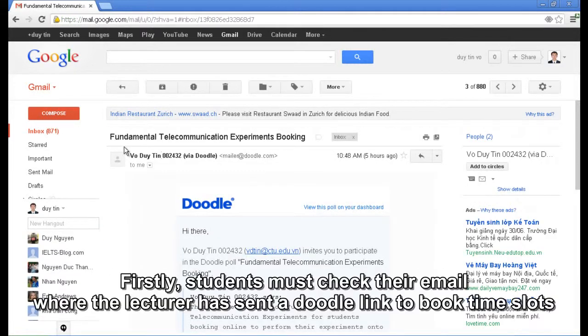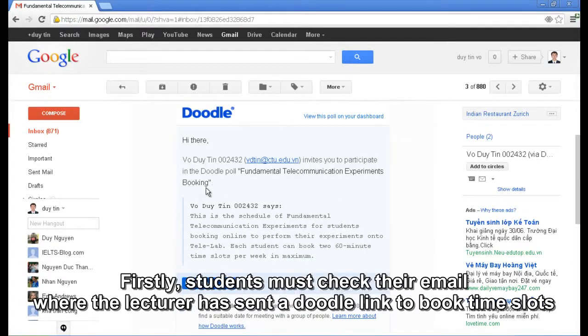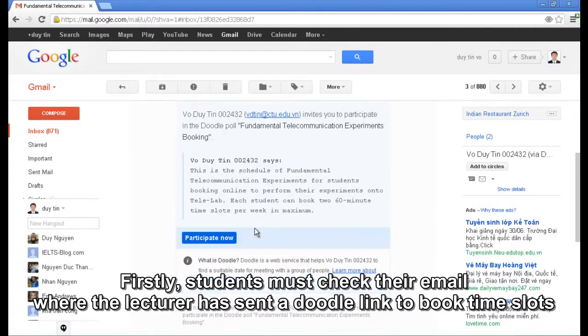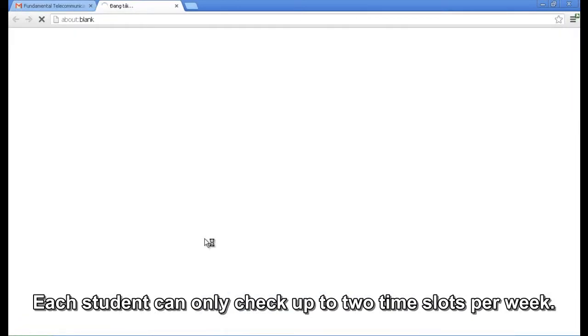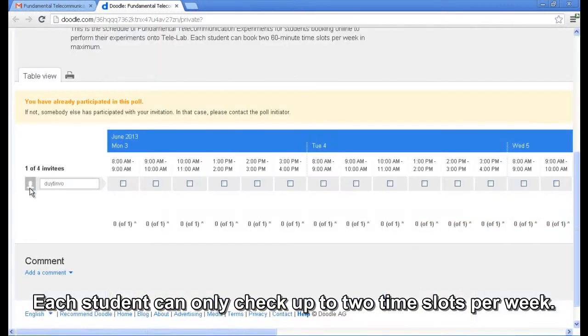First, students must check their email where the lecturer has sent a Doodle link to book time slots via Doodle scheduling service. Each student can only check up to two time slots per week.